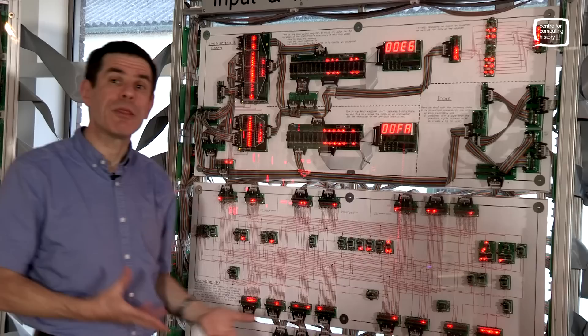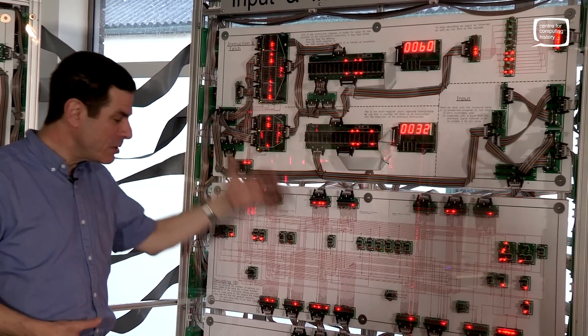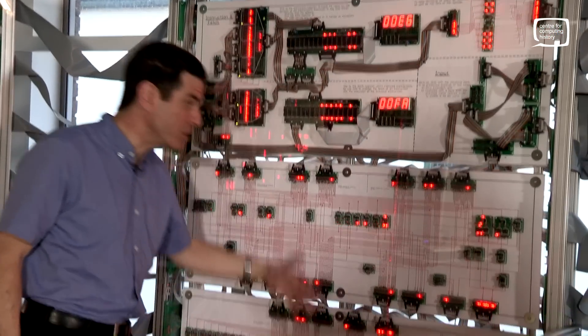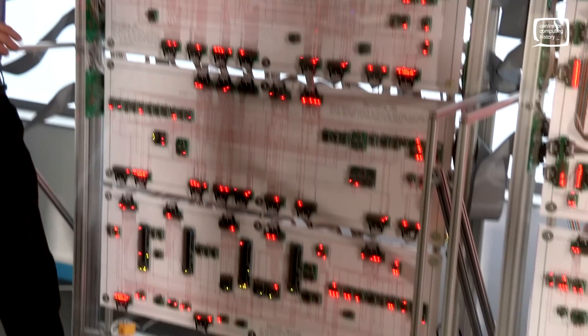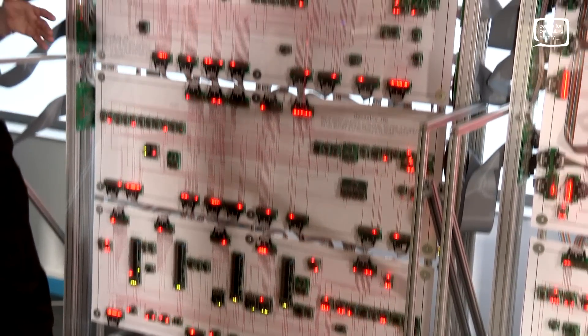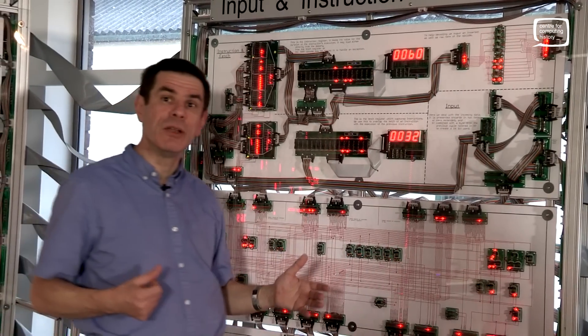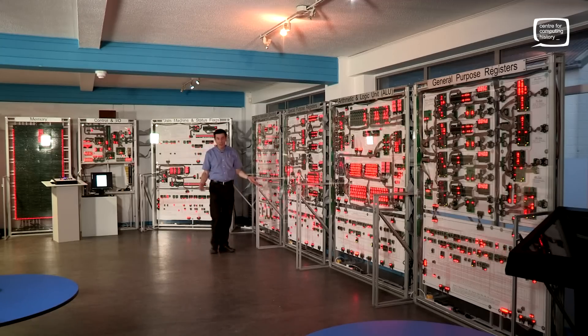To actually be able to do anything with it, we need to understand it, and that understanding is called decoding. And the decoding takes place with this set of logic down here. And this analyzes that number and works out what that instruction means, and sends commands up and down the machine to tell the different parts what to do to execute that instruction.